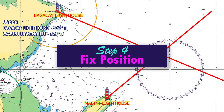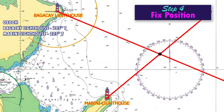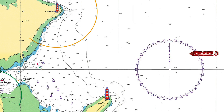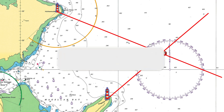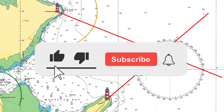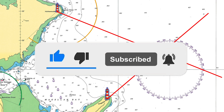Step 4: Fixed position. The point where the two bearing lines intersect is your fixed position. Mark it with a small circle and write the time beside it. This shows your ship's position at the moment the bearings were taken. And that's how you determine a fixed position using cross bearings — fast and simple. If you found this video helpful, please like, subscribe, and hit the notification bell for more navigation tutorials.